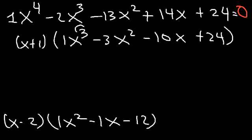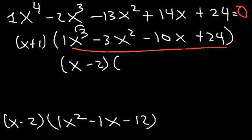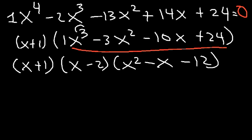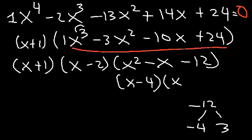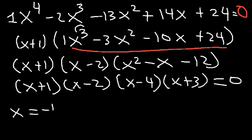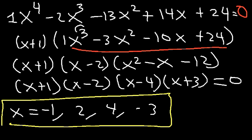So we can factor the expression as x plus 1 times x minus 2 times x squared minus x minus 12. Now factor the trinomial: two numbers that multiply to negative 12 and add to negative 1 are negative 4 and positive 3. So it's x minus 4 times x plus 3. Therefore, x is equal to negative 1, 2, 4, and negative 3. All of these are factors of 24.